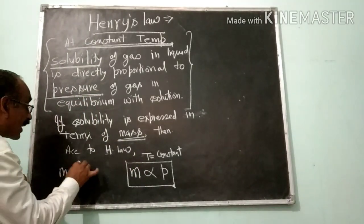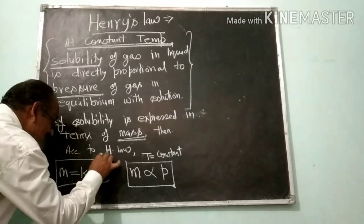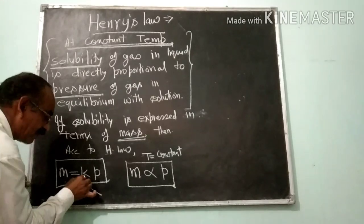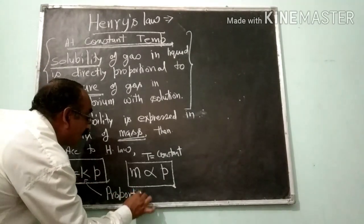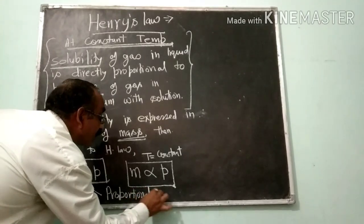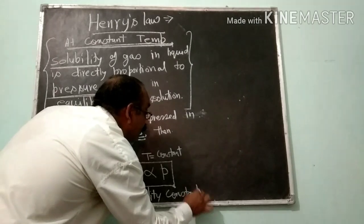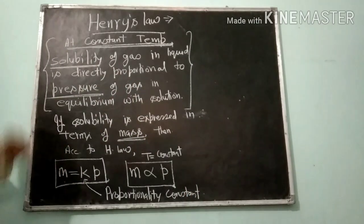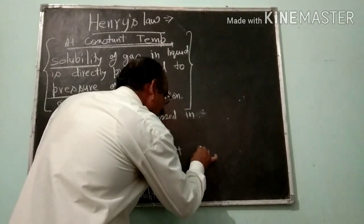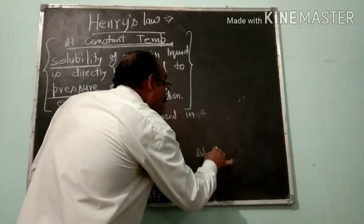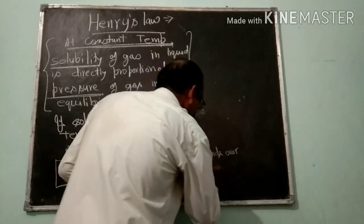If you remove the proportionality sign, then you will have a constant K, which is the proportionality constant. The value of this proportionality constant depends on the nature of the gas.